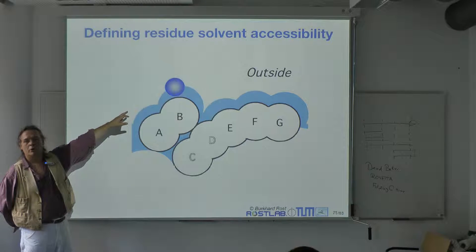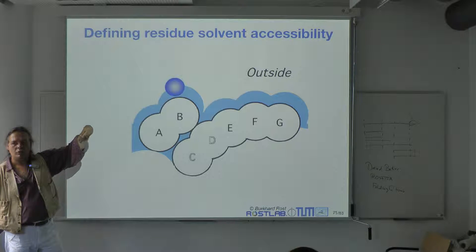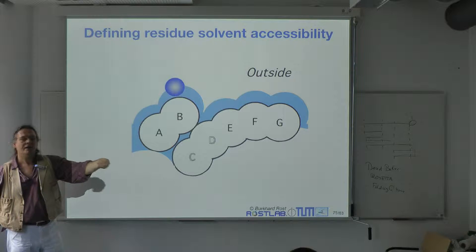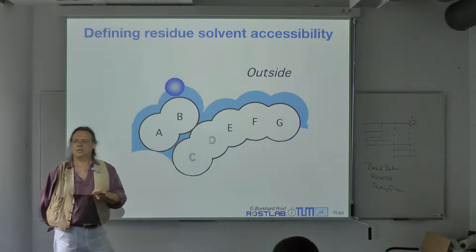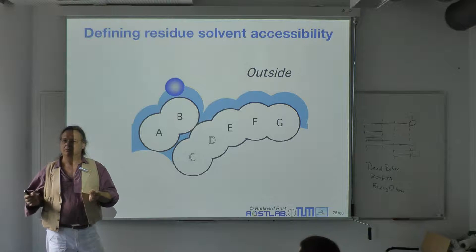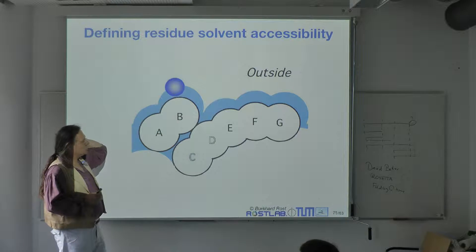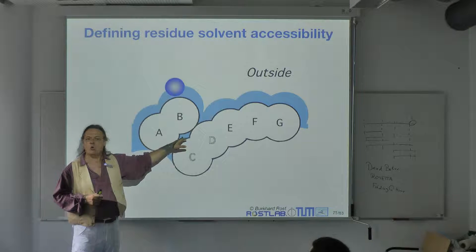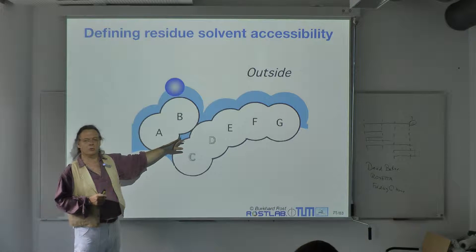Up there you see a water ball, and the way you compute solvent accessibility is essentially you roll the water ball over the protein and ask what fraction of the water ball is accessible, or what fraction of the residue is accessible. Water could come in here — there's a hole. Proteins do have holes; they are energetically not favorable, but they have surprisingly many holes.